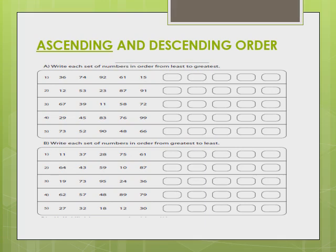After 75, 61 comes. Then 37. After 37, 28. And which is the least number? 11. Now students, do rest of the questions.